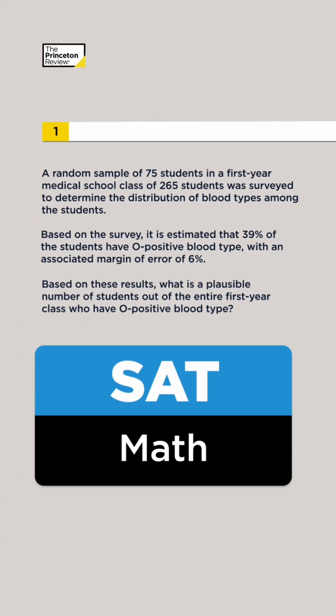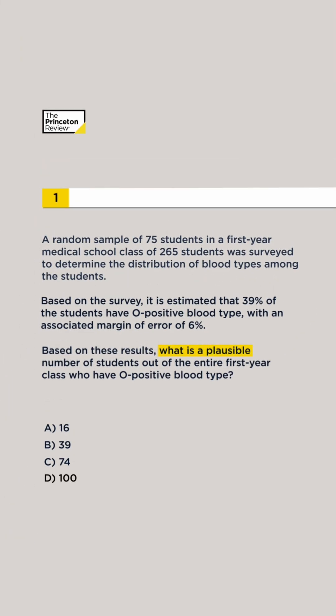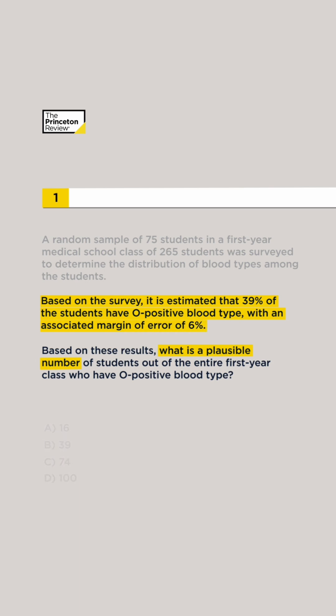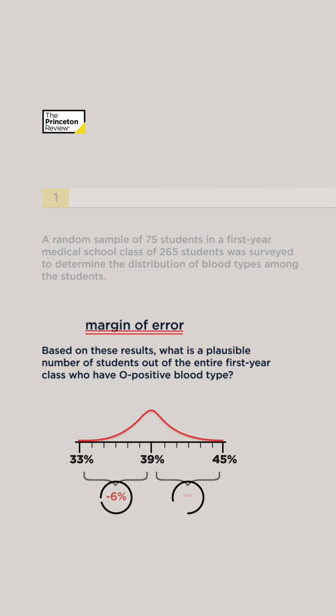Let's solve this SAT math question together. The question asks for a plausible value based on survey results and a margin of error. A margin of error expresses the amount of random sampling error in a survey's results.